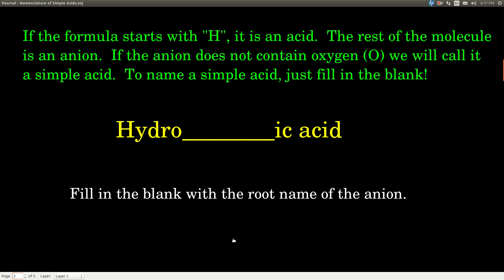Remember, if the formula for a molecule starts with H, that tells you that it's an acid, and the rest of the molecule will be an anion. Now, if the anion does not contain oxygen, that's what we're going to call a simple acid. And it's really easy to name a simple acid. You just have to fill in the blank.